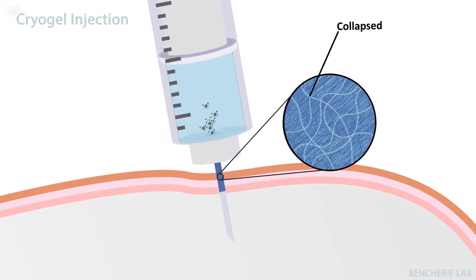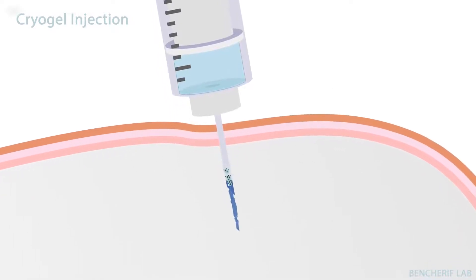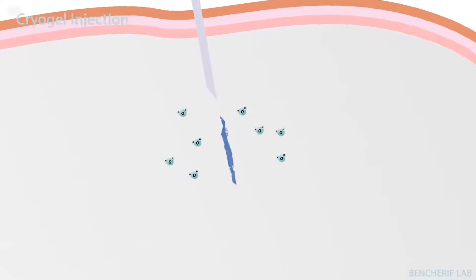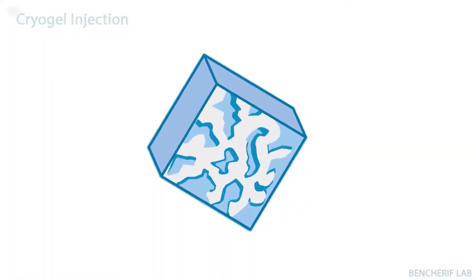This allows the cryogels to be pushed through a needle into the body. Once introduced in the body and hydrated, cryogels will spontaneously pop back to their original shape and dimensions. As you can see, these cryogels have shaped memory properties.